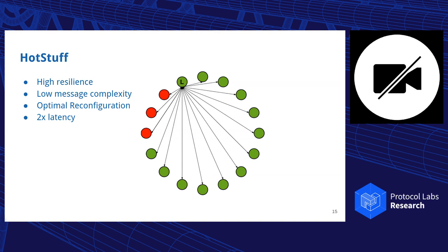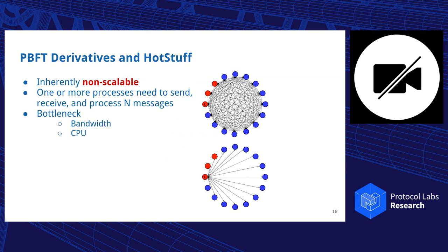It has the same high resilience, is able to drop a little bit of the message complexity, and still achieve optimal reconfiguration. But like I said, it now has twice the latency. One of the problems of these solutions is that they're actually inherently non-scalable, because one or more processes have to send, receive, and process all N messages.